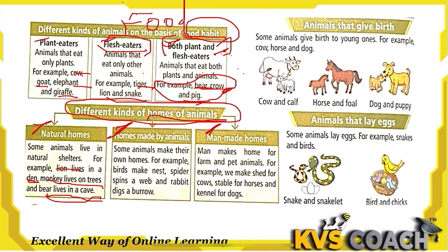Some animals make their own homes. For example, birds make nests, spiders make webs, and rabbits make burrows. These are homes made by the animals themselves.